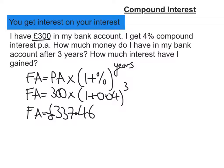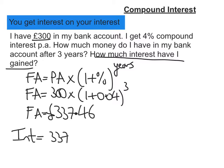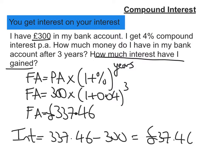So that answers the first part. The second part is how much interest have I gained? Well, I start with £300 and now I'm at £337.46. So the interest is just 337.46 minus 300, which gives £37 and 46 pence.